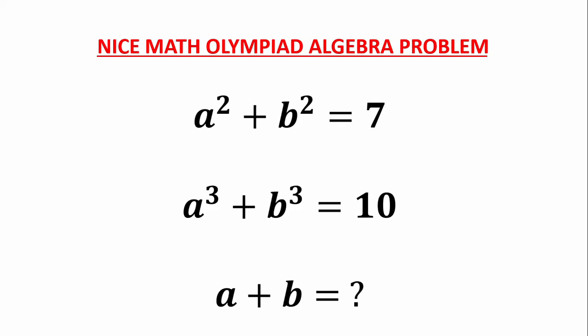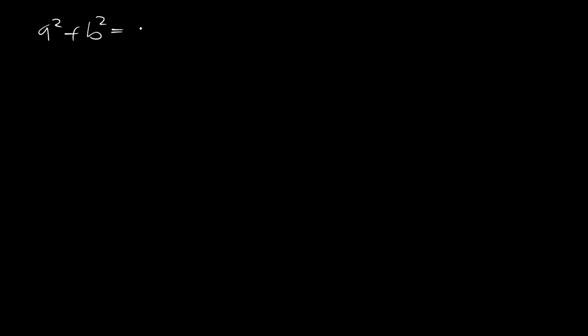This is all about an algebraic problem. You are given two equations and you are asked to find a plus b. You have a squared plus b squared is equal to 7, and a cubed plus b cubed equals 10. We are asked to find a plus b.